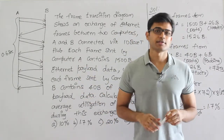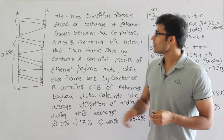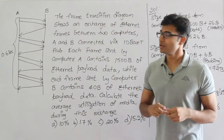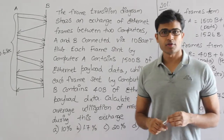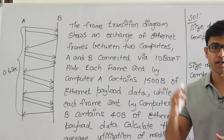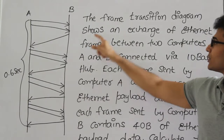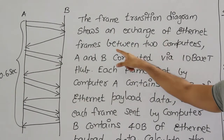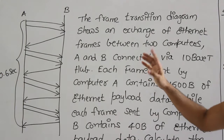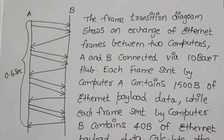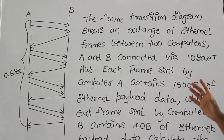The problem assumes two computers connected to an Ethernet hub. The frame transition diagram shows an exchange of Ethernet frames between two computers A and B, connected via a 10BaseT hub. We will now read the question completely and then solve it.